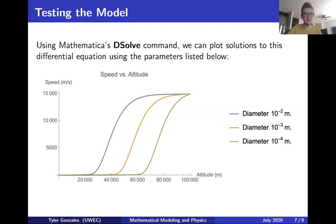Using Mathematica's DSolve command, we can plot solutions to this differential equation. We're using various parameters here, looking at different diameters for micrometeorites. Here we have one with diameter 10^-2 meters, 10^-3 meters, and 10^-4 meters.